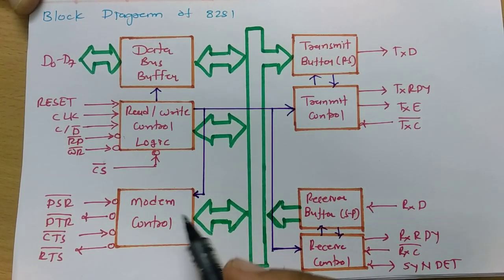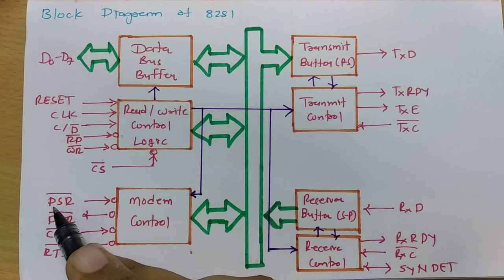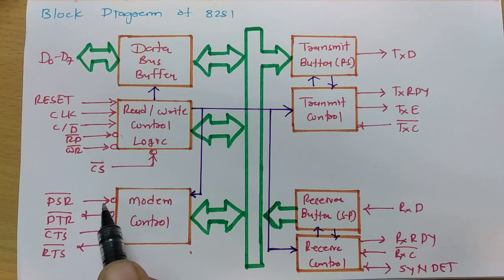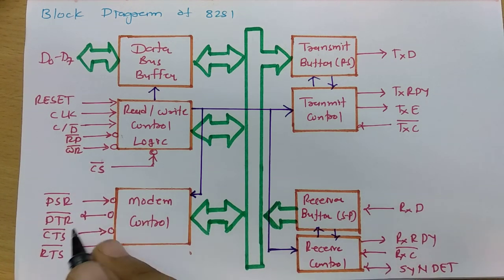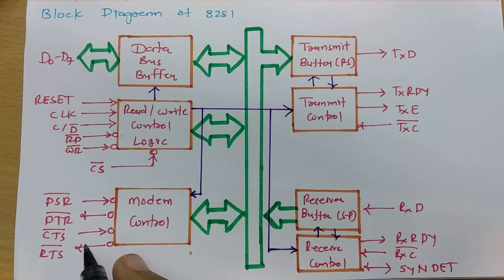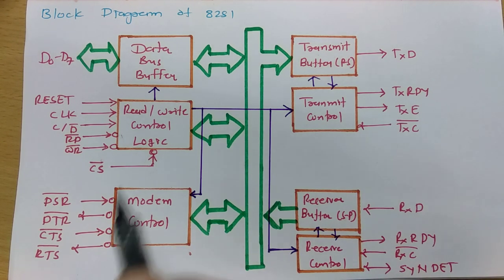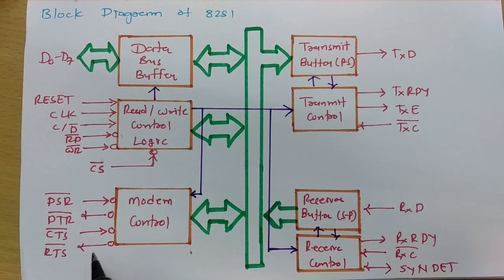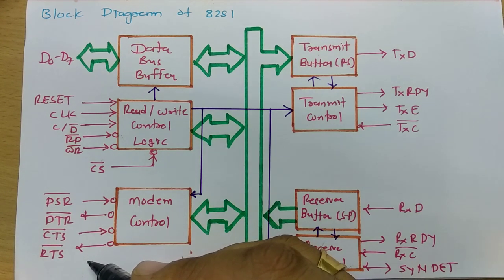A modem is connected to 8251. The modem has a DSR signal — Data Set Ready — and when the data set is ready, an active low signal is given to the modem. The DTR signal, Data Terminal Ready, is an output of 8251 — when the data terminal is ready for communication, it gives an active low signal. CTS means Clear To Send — it is an active low input signal indicating clearance to send data. RTS, Request To Send, is an output signal from 8251 requesting to send data.